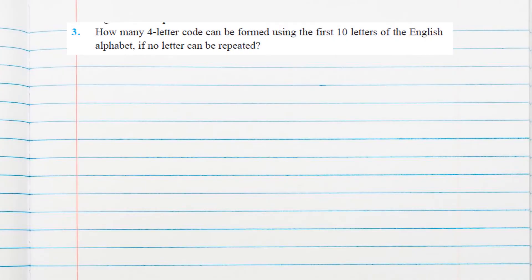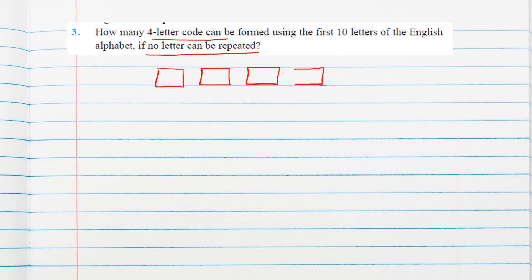Question 3: How many 4-letter codes can be formed using the first 10 letters of the English alphabet if no letter can be repeated? Repetition is not allowed. We have 4 places. For the 1st place, we have 10 letters available, so it can be filled in 10 ways.